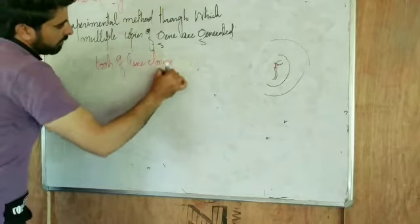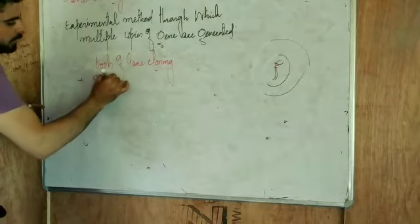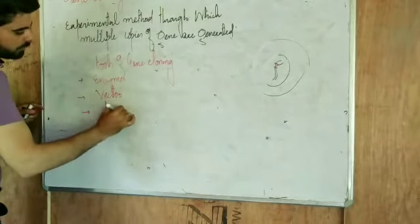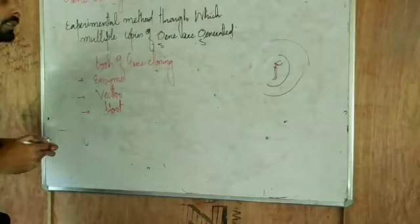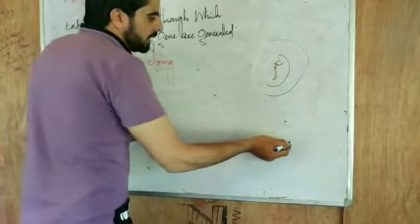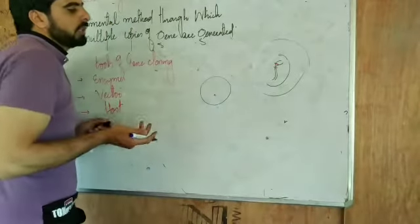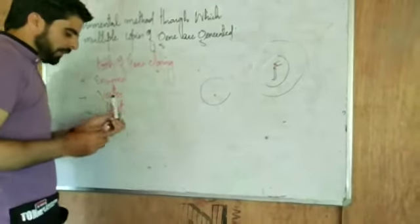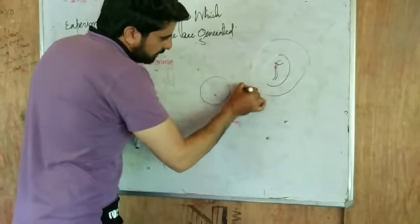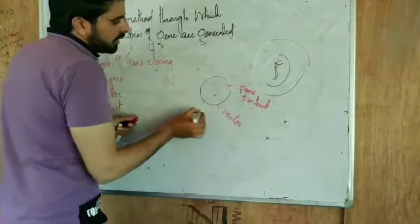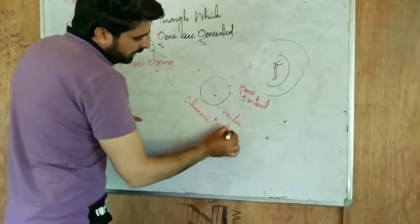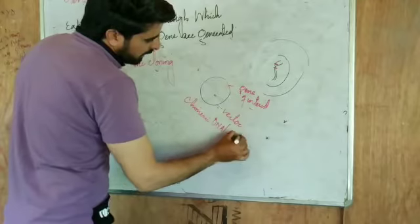For cloning a gene, we require various tools. The first one is enzymes. Then we require a vector, which may be a plasmid — an extra-chromosomal DNA present inside the bacterial cell. It is a circular molecular DNA. You fit the gene of interest into the vector. Now you can call this a chimeric DNA, or a recombinant DNA.